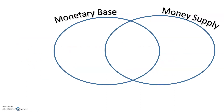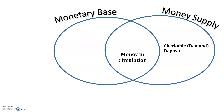When we're looking at comparing the money supply with the monetary base, what the College Board does is they first highlight what is similar, which is our money in circulation. And then when we're talking about the money supply, what we're looking at are our demand deposits or our checkable deposits.